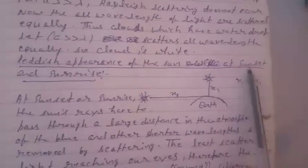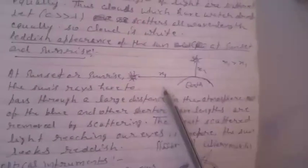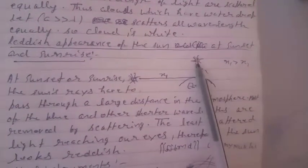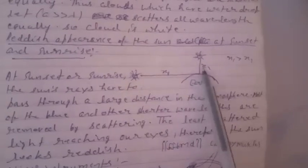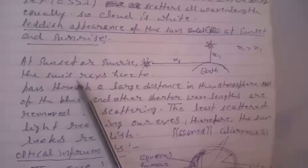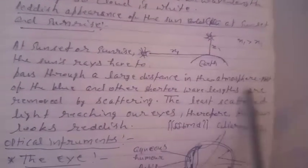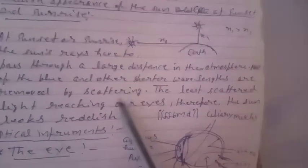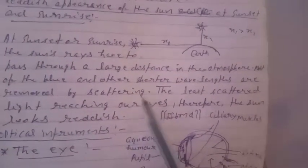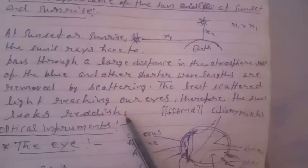Red appearance of the sun at sunset and sunrise: At sunset or sunrise, the sun's rays have to pass through a large distance in the atmosphere compared to when the sun is directly overhead. Most of the blue and other shorter wavelengths are removed by scattering. Since scattering is proportional to 1/λ⁴, colors with smaller wavelengths scatter more, while red, having the greatest wavelength, scatters least and reaches our eyes — so the sun looks reddish.